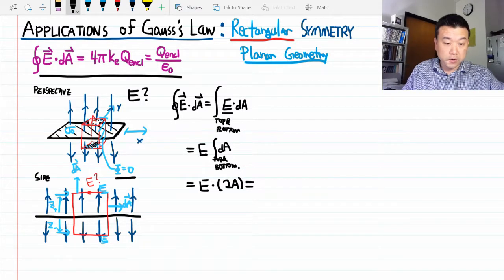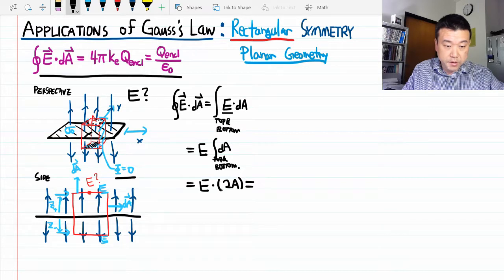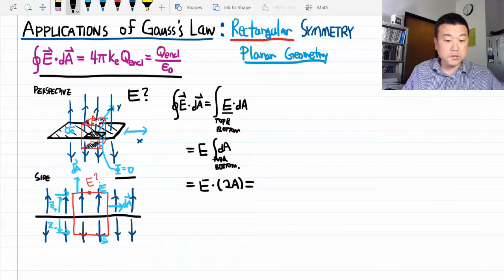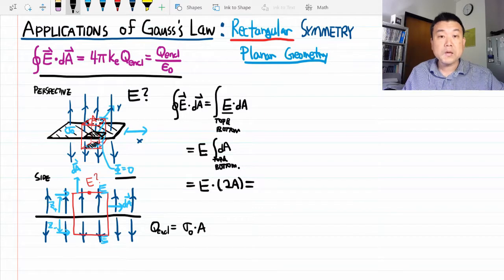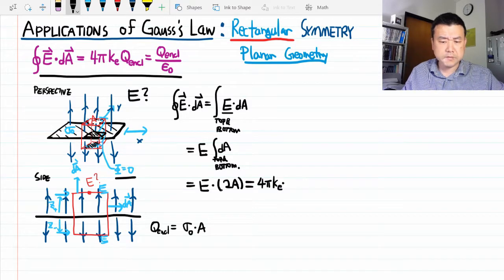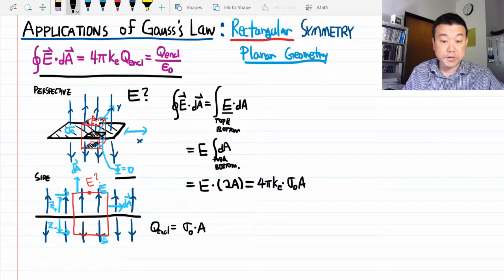That's equal to the right-hand side. Here, the charge enclosed would be this amount of charge here. And in terms of given parameters, the charge enclosed should be the surface charge density times the area. So the right-hand side is a bunch of constants times more constants. Let me finish the solution here.